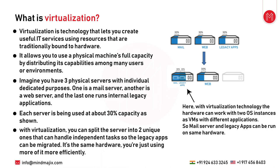Consider three servers each dedicated to an application — a mail server, a web server, and a legacy application server — each running at about 30% utilization of their actual resources. If a server has 100 GB of RAM but uses only 30 GB, the rest 70% is idle most of the time. All three servers are underutilized and even if the mail server has 70% available, the web server cannot borrow those resources.